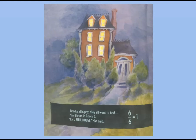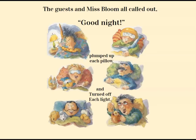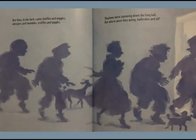Tired and happy, they all went to bed, Miss Bloom in room six. It's a full house, she said. The guests and Miss Bloom all called out, good night, plumped up each pillow and turned off each light. But then in the dark came shuffles and wiggles, whispers and mumbles, scuffles and giggles. Shadows were tiptoeing down the long hall. But where were they going, bathrobes and all?